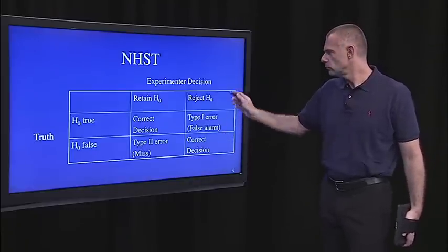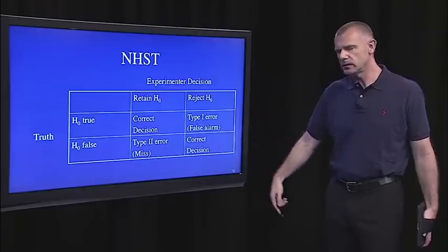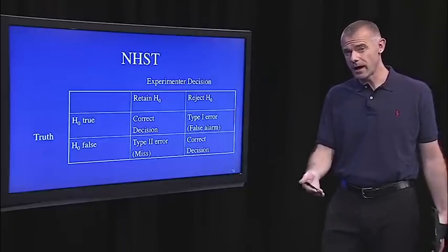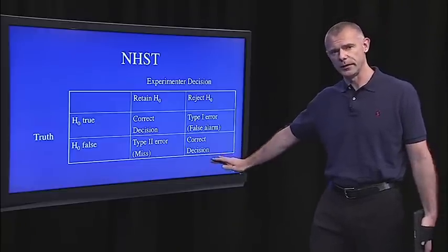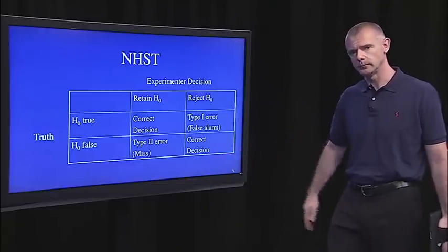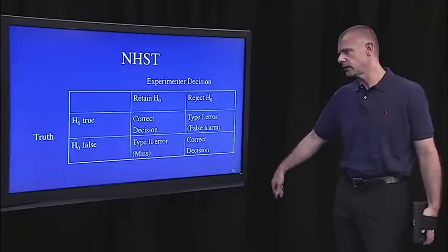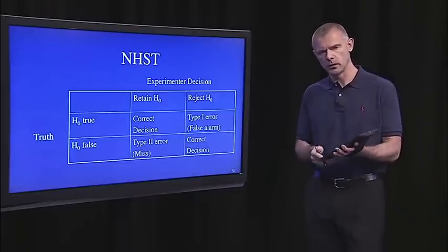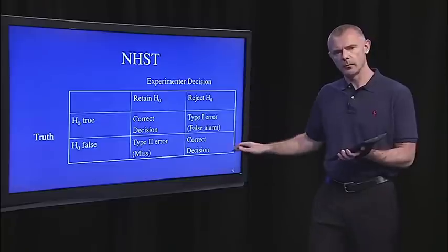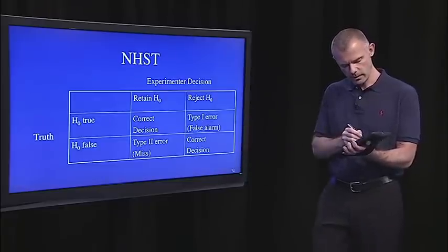Go down to the bottom row. If you, the experimenter, made the decision to retain the null when, in fact, it's false, then you've missed an opportunity. And that's a type two error. But if you rejected it, when, in fact, it's false, then great, you've made the correct decision. So if you do this, you're gonna wind up in one of these four outcomes.